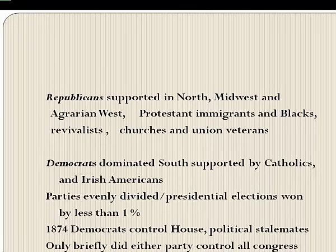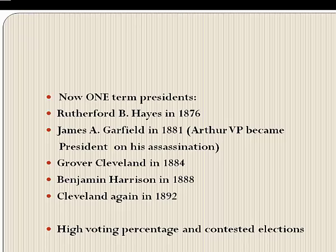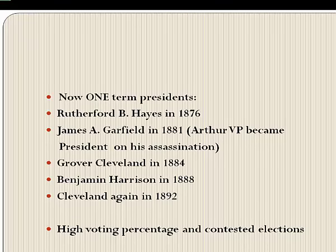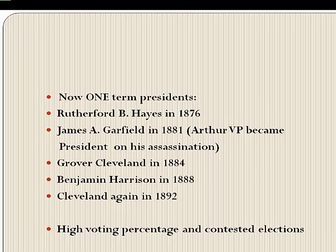In 1874, Democrats won control of the House of Representatives, starting a period of political stalemate in which little new legislation passed for almost 20 years. Only briefly did either party control both Congress and the White House, and a series of one-term presidents followed — Hayes, Garfield (who was assassinated), Grover Cleveland, Benjamin Harrison, and then Cleveland again. Cleveland has the distinction of being the only president to serve two terms that were not consecutive.